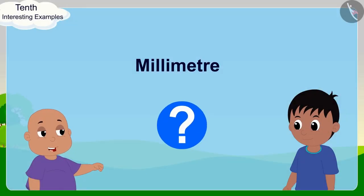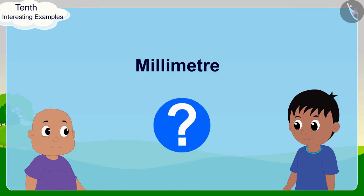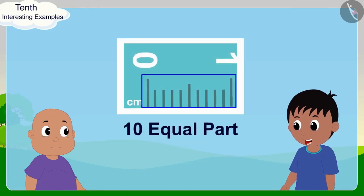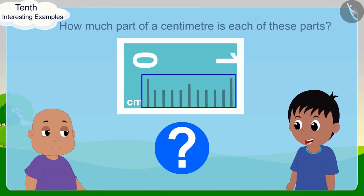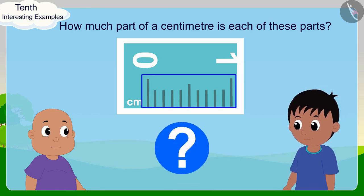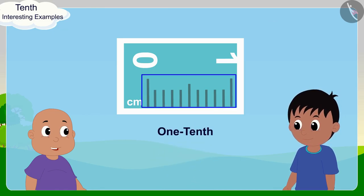'Now what is this millimeter?' Bablu asked Raju. 'Look, there are 10 equal parts of a centimeter on a scale. So how much part of a centimeter is each of these parts?' Raju asked Bablu. 'One-tenth!' Bablu quickly responded.